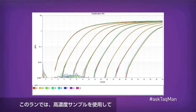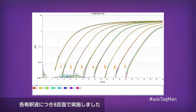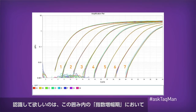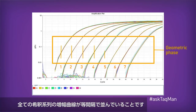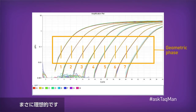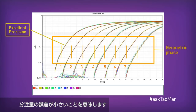In this run, we took a highly concentrated sample and serially diluted it in tenfold increments over seven logs. We also ran eight technical replicates for each dilution point. What I want you to notice is this: in the geometric phase, which is approximately the area inside this box, all of the dilutions are very evenly spaced, exactly as we would expect. Also, the pipetting replicates are very tight, meaning we have excellent precision.